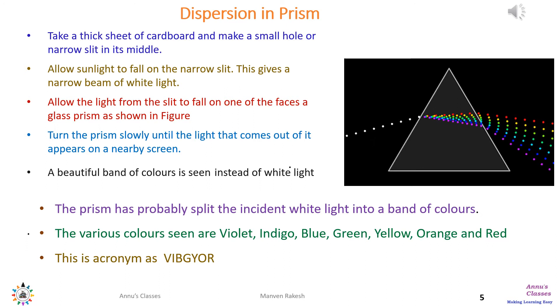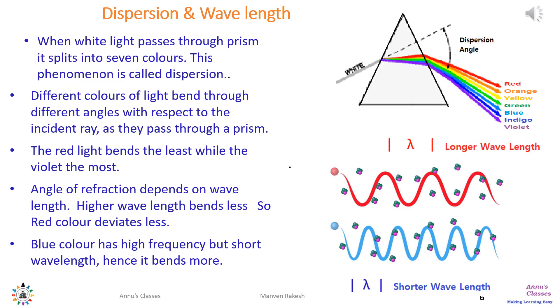This beautiful band of colors has the colors violet, indigo, blue, green, yellow, orange, and red, which is known by the acronym VIBGYOR. The splitting of white light into seven colors when passing through prism is called dispersion.